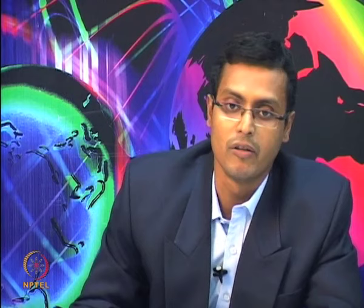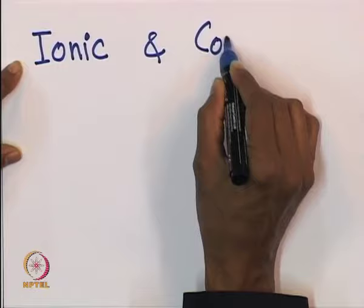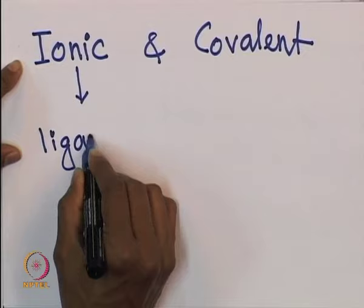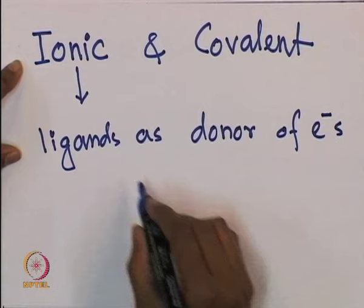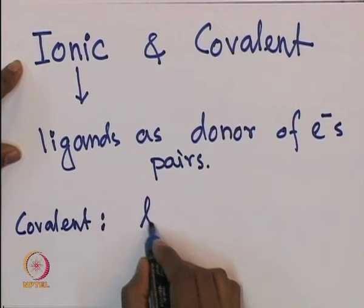In order to count the electrons of an organometallic complex, we usually follow two methods. One is the ionic method and another is the covalent method. In the ionic method, we consider ligands as donors of electrons. In the covalent method, we consider the ligand as a neutral species.